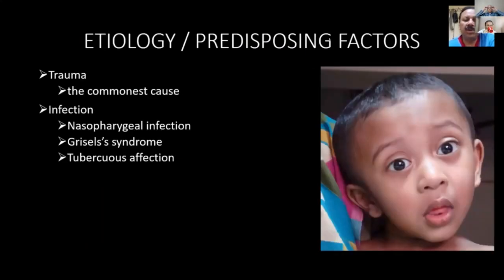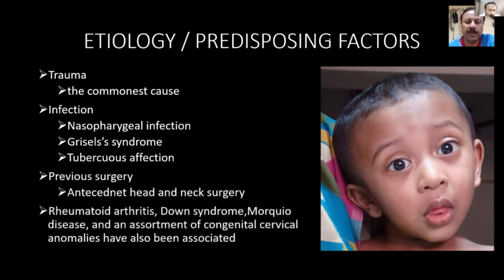The commonest etiology is trauma, and secondly infection — which might be a nasopharyngeal infection or proximal lymphadenitis in the neck region, known as Grisel's syndrome, or tubercular infection. Previous surgeries, especially of the head and neck region, can lead to soft tissue contractions and ultimately atlanto-axial subluxation.